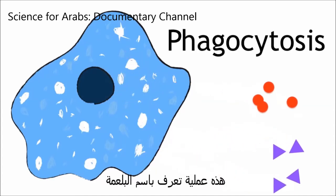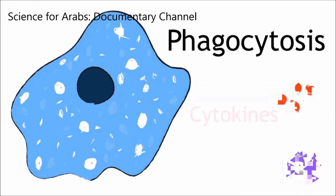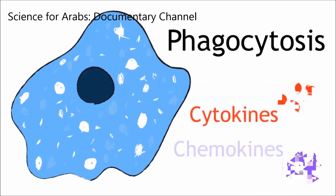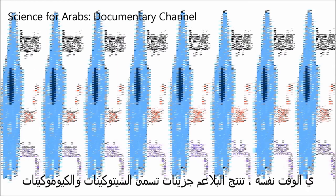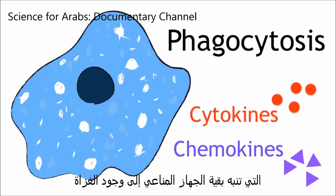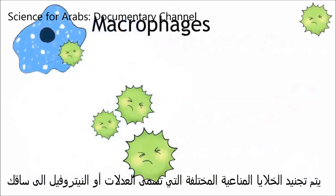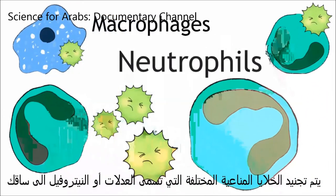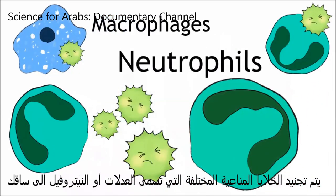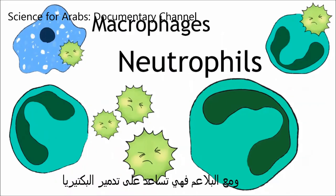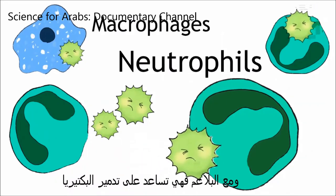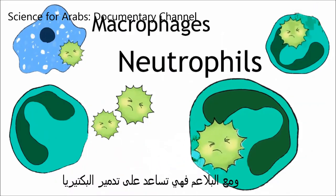At the same time, the macrophages produce molecules called cytokines and chemokines that alert the rest of the immune system to the presence of the invader. Different immune cells called neutrophils are recruited to your leg, and with the macrophages, they help to destroy the bacteria.